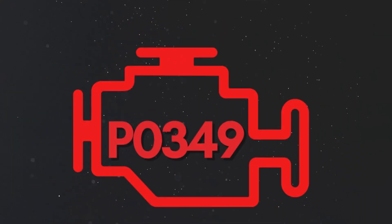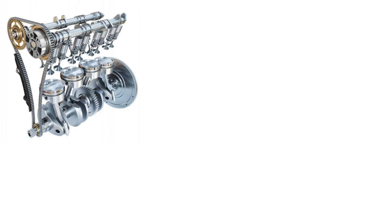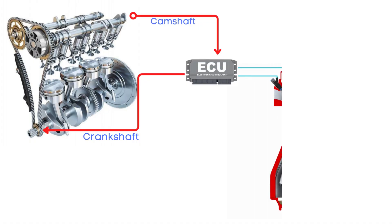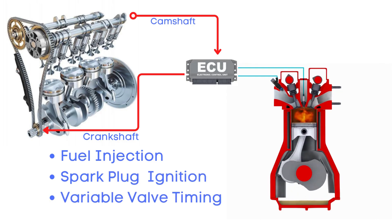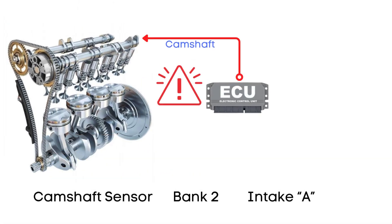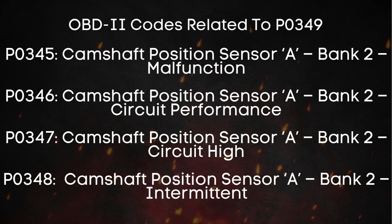The camshaft position sensor keeps track of the exact position of the camshaft as it rotates and constantly sends this signal to the ECU, or engine control unit. The ECU also takes in information from the crankshaft position sensor, engine speed, and engine load to precisely control fuel injection, ignition timing, and valve timing. If there's a problem with the camshaft position sensor circuit, the ECU can't get the right camshaft data and triggers the P0349 code.